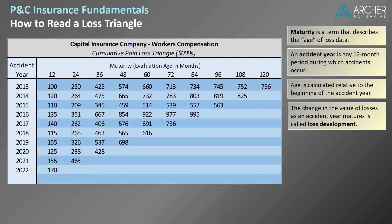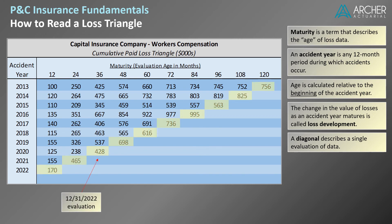In addition to columns and rows, the diagonals of loss triangles are also meaningful. Actuaries use the term diagonal to describe a single evaluation of data. In our example, the 12-31-2022 evaluation is represented as the rightmost diagonal in the triangle. Note that 12-31-2022 is 12 months after the beginning of accident year 2022, 24 months after the beginning of accident year 2021, and so on. Each diagonal in this triangle corresponds to a year-end evaluation of data. Another example would be the 12-31-2021 evaluation, which appears as the second to last diagonal.